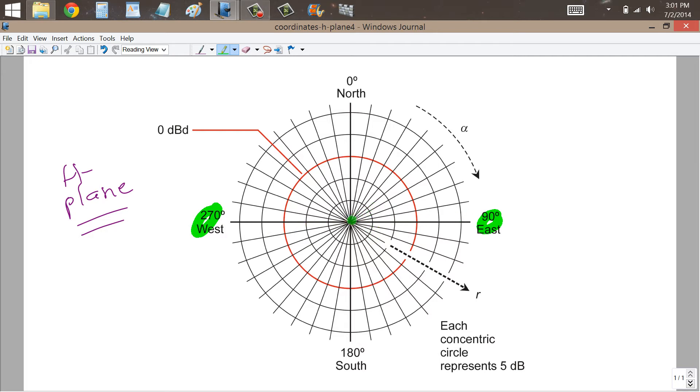If you plot a directional pattern and this red circle represents 0 dBd, that is to say, the gain that a dipole antenna, a half-wave dipole would have, your main lobes are going to look something like this. There are going to be a couple of dBd of gain and they are going to be at somewhere around 45 degree angles with respect to the wire axis.